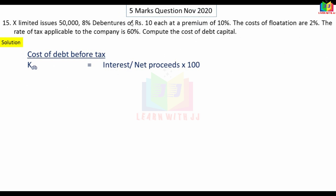Interest equals 50,000 debentures into Rs. 10 face value into 8%, which gives Rs. 40,000. Net proceeds formula: face value plus premium minus flotation cost. Face value is 50,000 into 10 equals 5 lakh. Premium is 10% equals 50,000. So issue price is 5 lakh plus 50,000 equals Rs. 5,50,000.